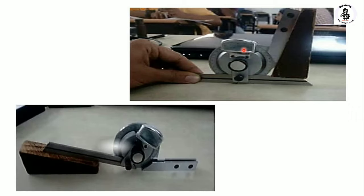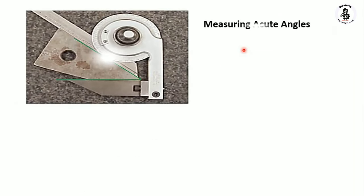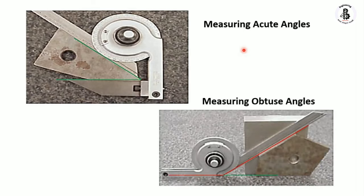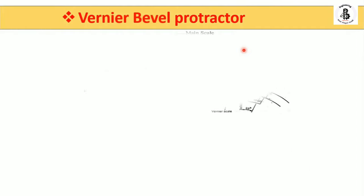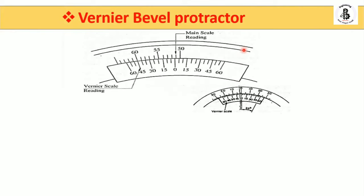This is an actual practice example. This is my component made of wood. This shows the adjustment of the base and the blade, and you can take the reading with the main scale as well as with the help of the vernier scale. There are also some more positions for measuring an angle — this one is for measuring acute angles, and this is for measuring the obtuse angle.